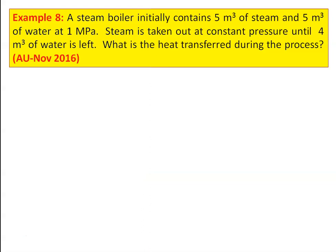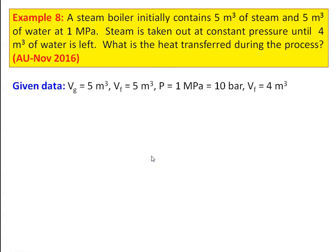This is example number 8, from the Anna University question paper November 2016. A steam boiler initially contains 5 meter cube of steam and 5 meter cube of water at 1 mega Pascal. The steam is taken out at constant pressure until 4 meter cube of water is left. What is the heat transfer during this process? Given data: Vg equal to 5 meter cube, Vf equal to 4 meter cube, and pressure equal to 1 mega Pascal, which is 10 bar.